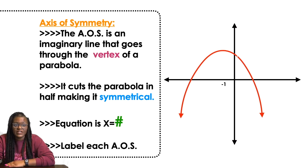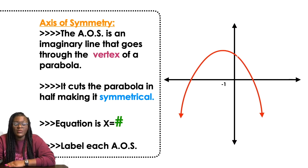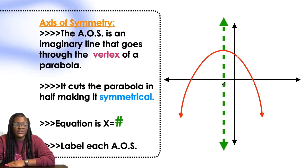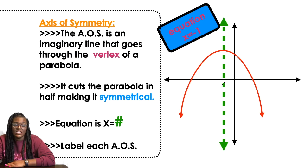So again, same thing but different picture this time. So we're looking at our axis of symmetry. It's going through the negative 1, so I'm going to label it as x equals negative 1.